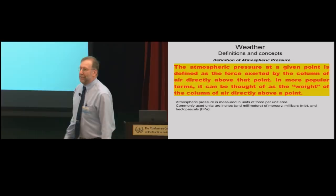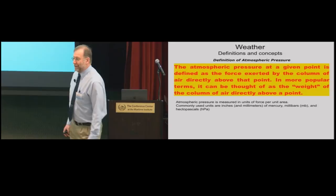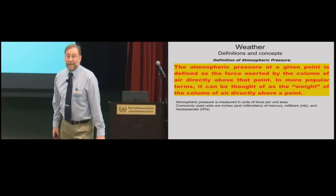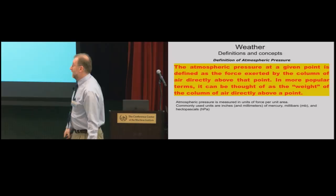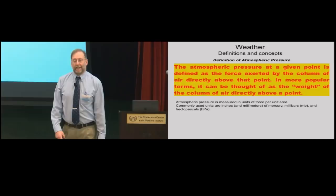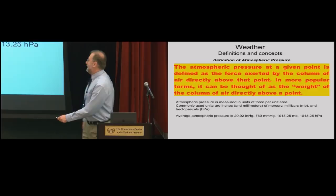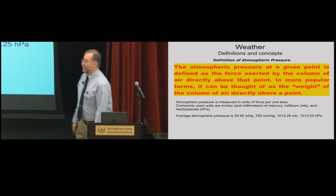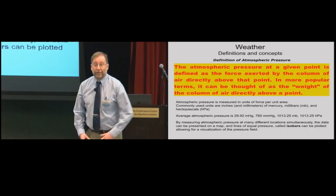Let's start with the definition of atmospheric pressure. As Frank mentioned, the atmosphere is three-dimensional. If you have a barometer on board, you can determine atmospheric pressure — defined as the force exerted by a column of air. The atmosphere weighs something, and that weight exerts a force we call atmospheric pressure. We measure it in units of force per unit area: inches or millimeters of mercury, millibars, and hectopascals. Millibars and hectopascals are the same thing. The average atmospheric pressure worldwide is 29.92 inches of mercury, 760 mm of mercury, or 1,013.25 millibars.